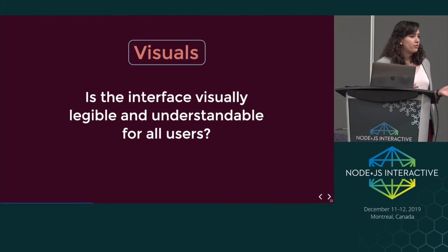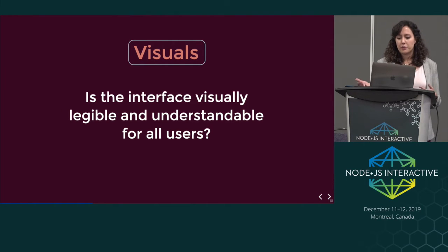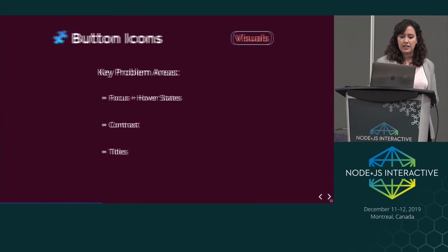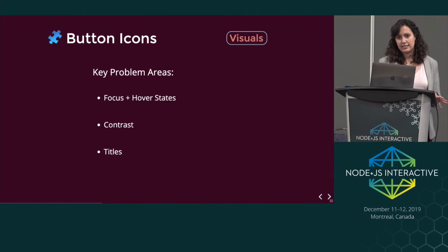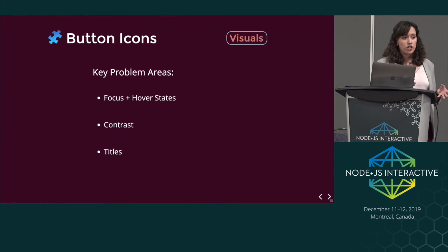To start, we'll look at the visual side of things: is the interface visually legible and understandable for all users? For button icons in particular, there tend to be three key problem areas: focus and hover states, contrast — especially color contrast — and titles.